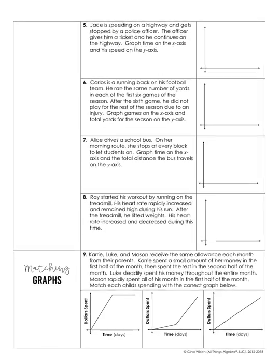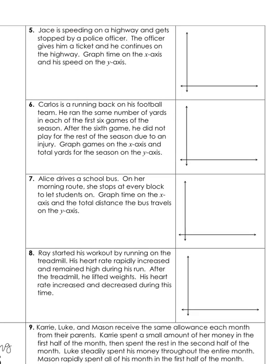Number five says: Jace is speeding on a highway and gets stopped by a police officer. The officer gives him a ticket and he continues on the highway. Graph time on the x-axis and his speed on the y. The easiest way to do these is to put yourself in the situation. Jace is speeding on the highway, so his speed would be really high. If we're speeding, it's not down here at zero — I need to start up here.